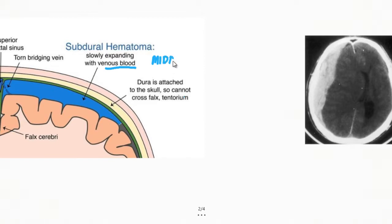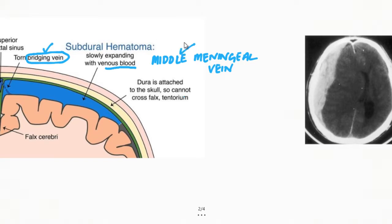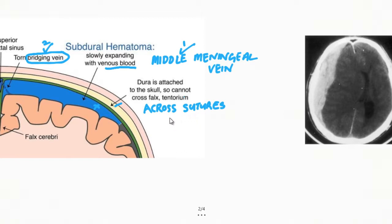The vein usually involved is the middle meningeal vein. Other veins like bridging veins can also be involved. So the origin of bleed is venous — usually the middle meningeal or bridging vein. The blood collects below the dura mater, which is why it is known as subdural hematoma — it happens beneath the dura mater, and spreads across sutures, not across dural attachments like an epidural hematoma.